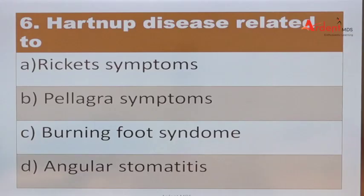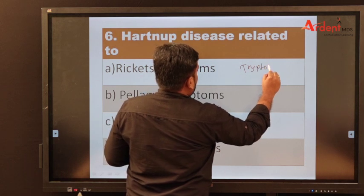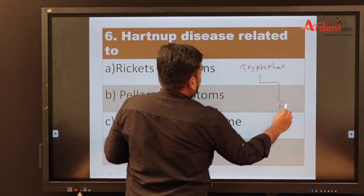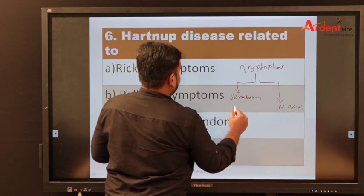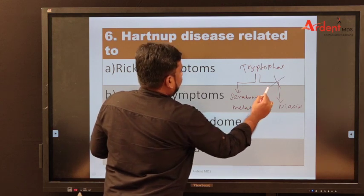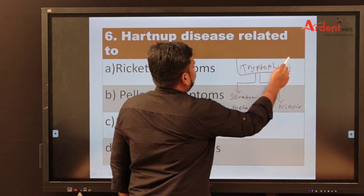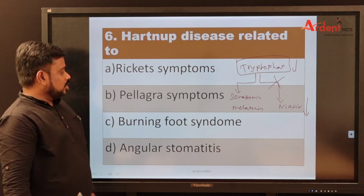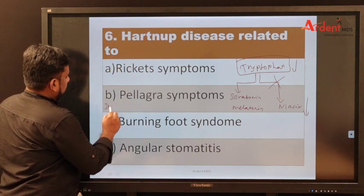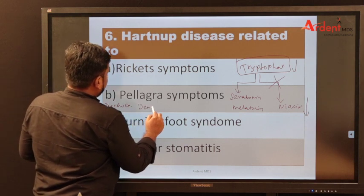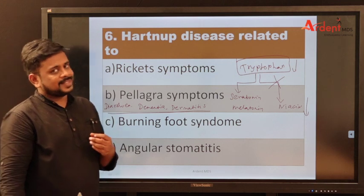Hartnup disease is related to decreased intestinal absorption of tryptophan. Tryptophan goes through two pathways: one helps form niacin, the other forms serotonin and melatonin. If tryptophan is not absorbed, there is decreased tryptophan leading to decreased niacin, which leads to pellagra symptoms — the three D's of pellagra are diarrhea, dementia, and dermatitis. Untreated, it leads to a fourth D: death.